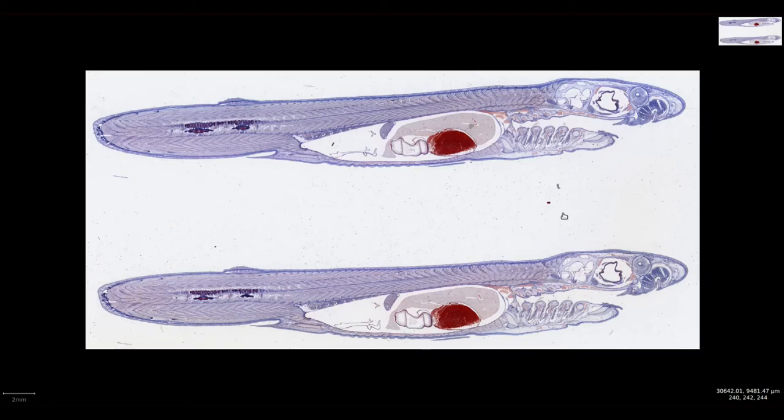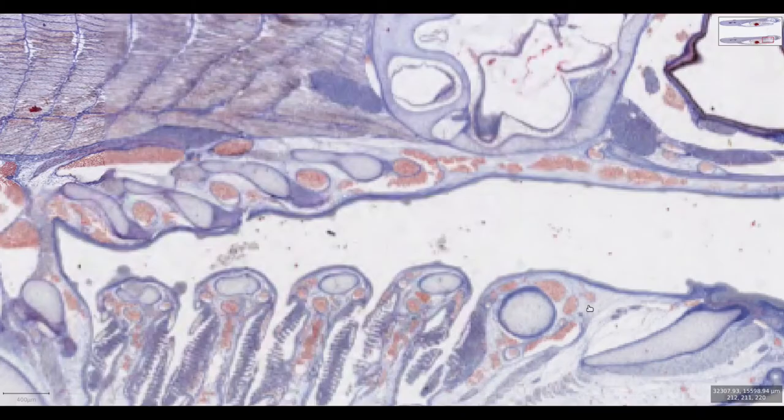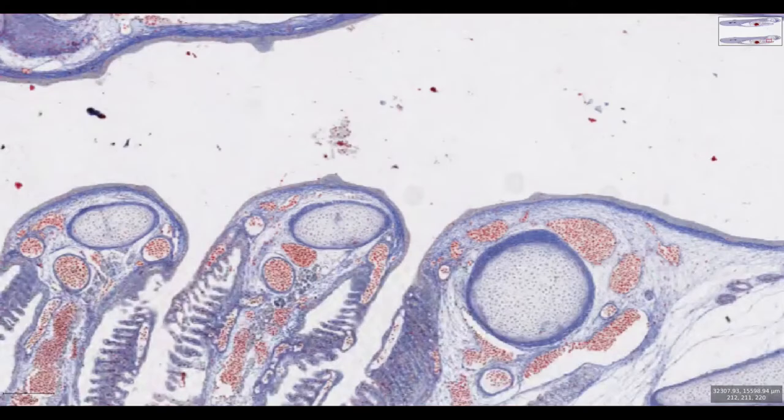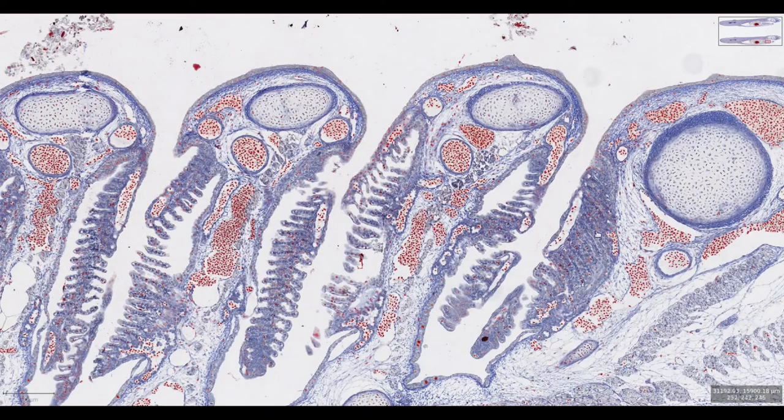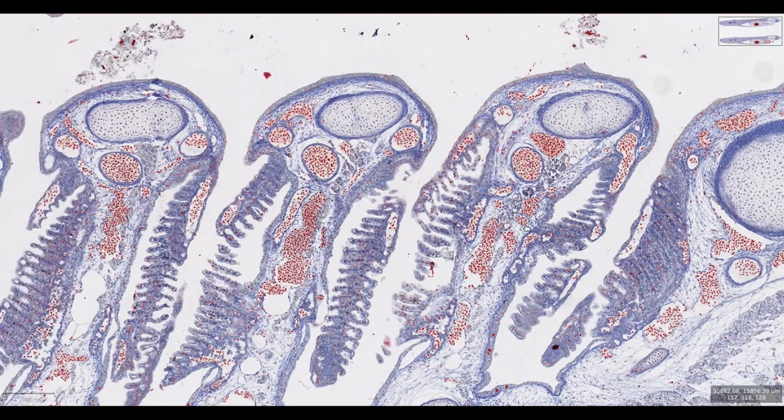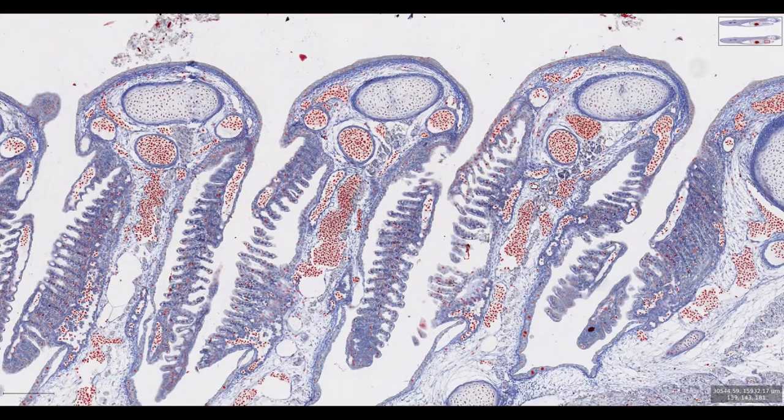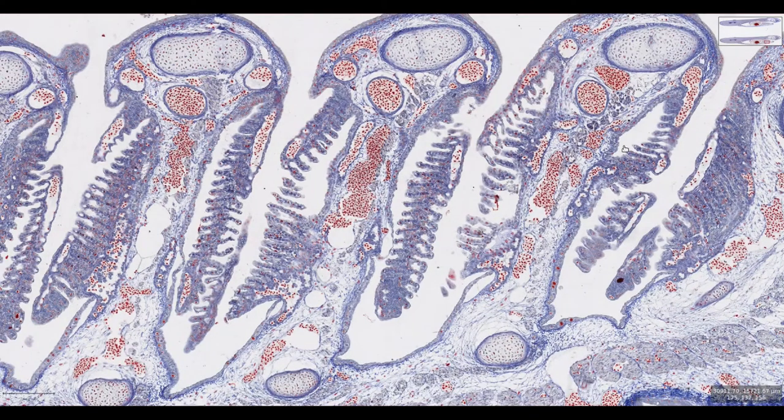Dogfish have five gills on each side, but there are up to seven in other species of shark. We can see the five gill arches in this section on slide 237. You'll notice that the first gill arch has functional tissue only on the caudal aspect. The other four gill arches have functional tissue on both the caudal and cranial aspect.